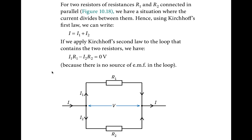For the parallel circuit with resistors R1 and R2, the total current I divides into I1 through R1 and I2 through R2. Applying Kirchhoff's first law, I equals I1 plus I2. Applying the second law to the inner loop containing only R1 and R2 and no power source gives I1R1 minus I2R2 equals zero.